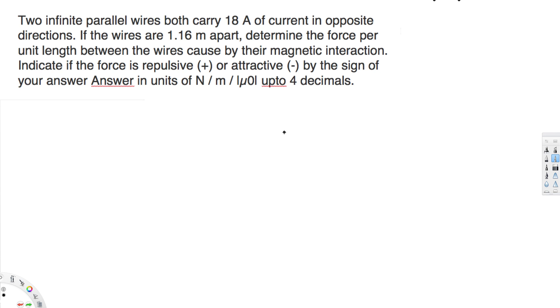This question asks: two infinite parallel wires both carry 18 amperes of current in opposite directions. If the wires are 1.16 meters apart, determine the force per unit length between the wires caused by their magnetic interaction.